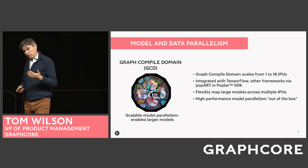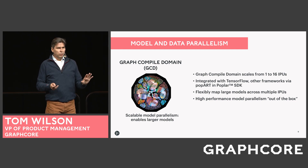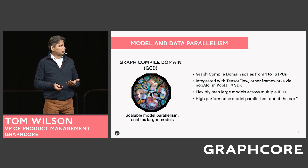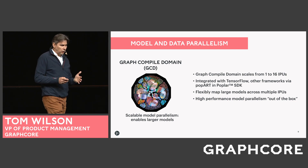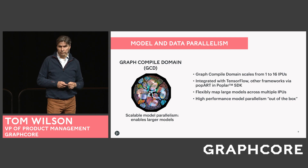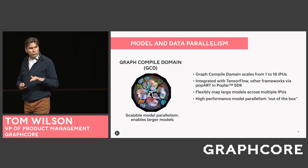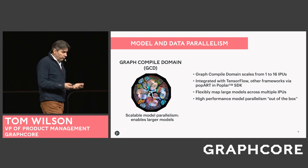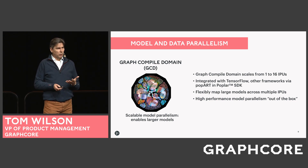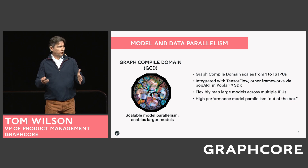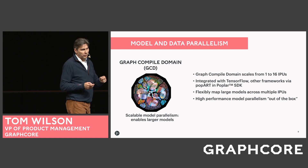A key tool within the Poplar SDK is the Graph Compile Domain, or GCD. GCD enables scalable model parallelism. We're used to very wide use of data parallelism, but model parallelism has a lot of power and flexibility. The Graph Compile Domain allows you to target 1 to 16 IPUs with your model, flexibly mapping models across IPUs. It's integrated with TensorFlow and other frameworks via Poppart — our Poplar Advanced Runtime — providing high-performance model parallelism right out of the box.